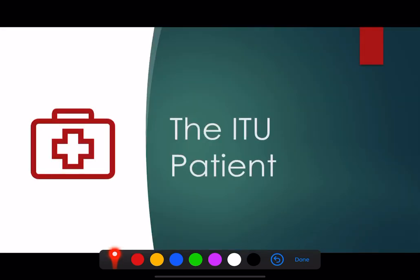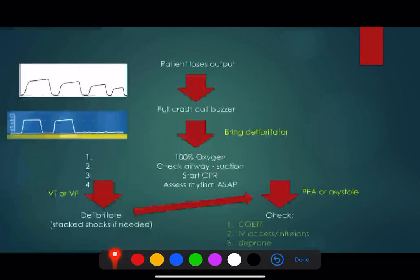Let's think about the intensive care patient - the patient who's intubated, ventilated, has developed severe respiratory failure and is being proned to improve both their oxygenation and CO2 removal. This patient loses output. This is usually detected by the nurse through the arterial line or the SATS trace or by the pulse. Generally speaking, if they're prone, the only thing you're really going to be going off is the arterial trace, the plethysmography trace, and of course the ECG.